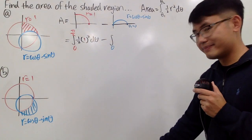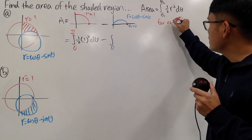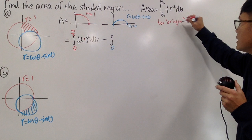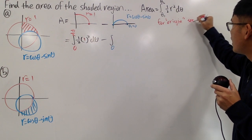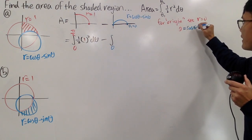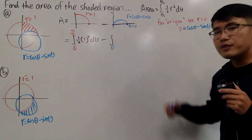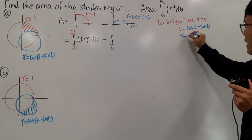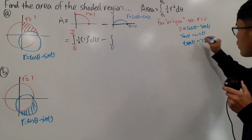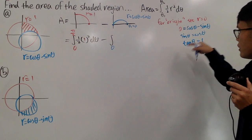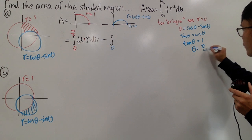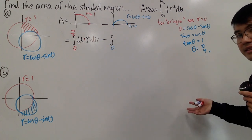Because we are at the origin — also called the pole — we have to set r equal to 0. So we get 0 equals cosine theta minus sine theta. Bringing sine theta to the other side gives sine theta equals cosine theta. Dividing both sides by cosine theta gives tangent theta equals 1. The first answer is pi over 4, and the next is 5 pi over 4, and many more.